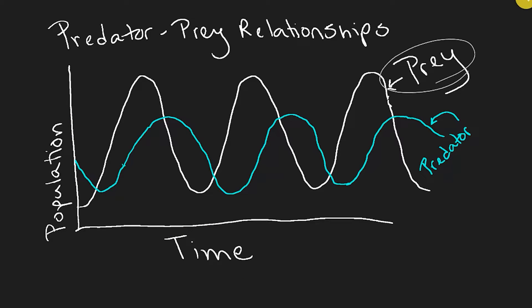Let's start by looking at the prey. The prey numbers are going to increase when the conditions are right — so when there's plenty of food and water and the predator level is low. Their numbers increase because the reproduction rates are higher than they are getting eaten off by the predators. Then the population is going to peak, and it peaks because of an increase in the number of predators. There's plenty of food and the predators are able to eat as much as they want, so their numbers are going to increase. As their population increases, the prey population peaks and starts to drop back down.